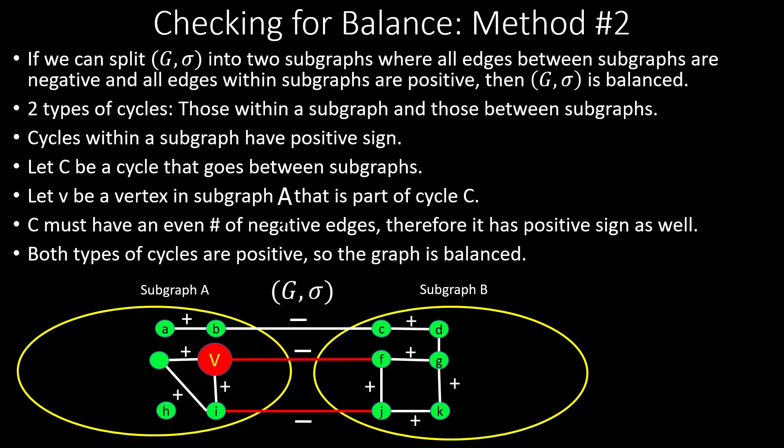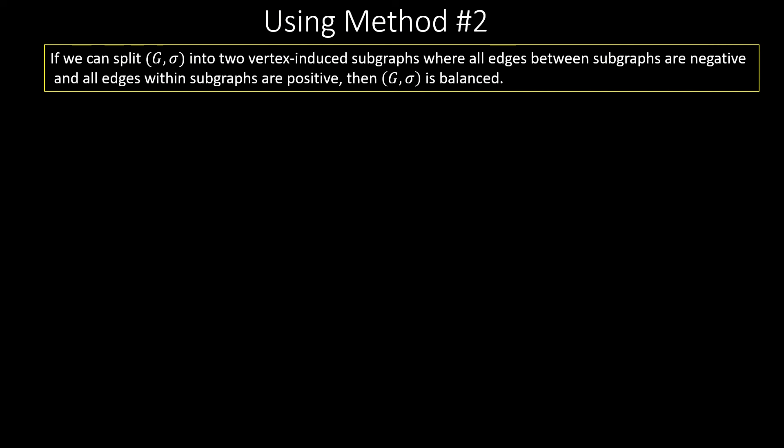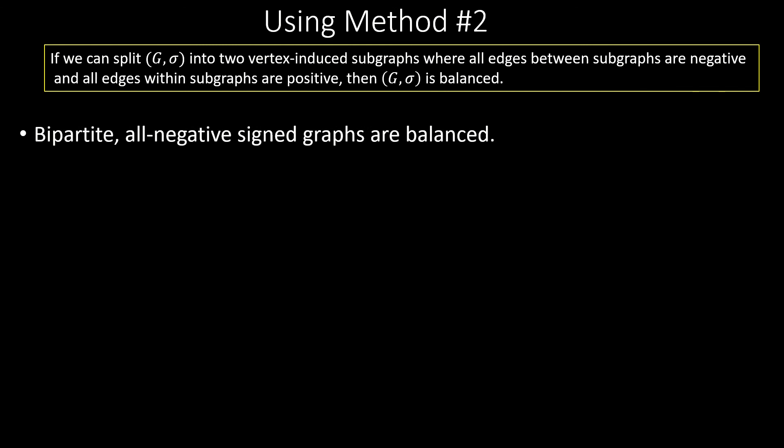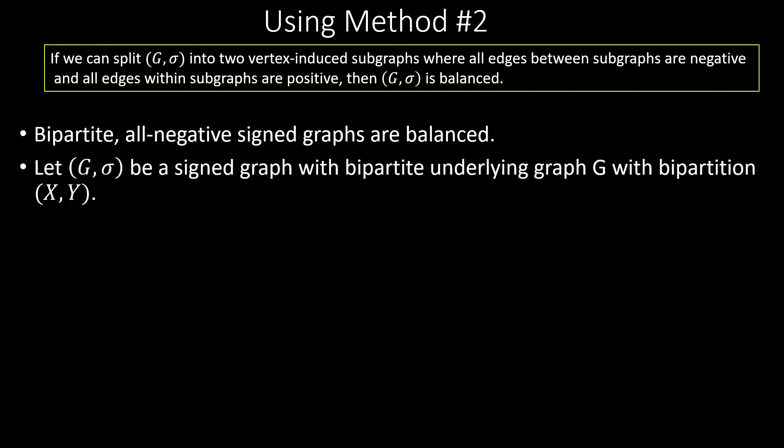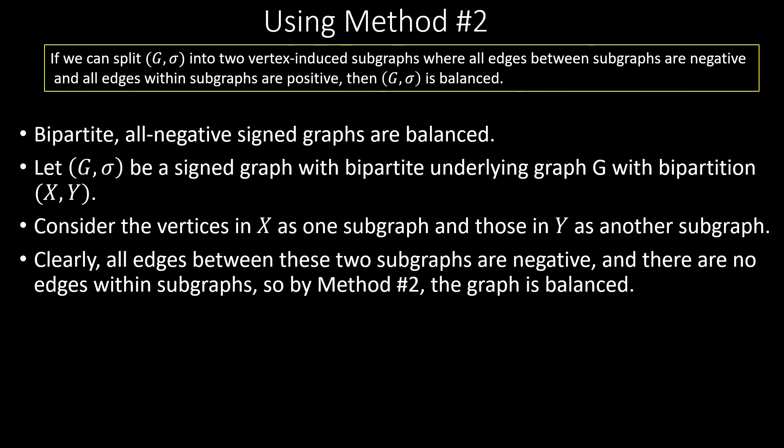Using the second method, we can say that bipartite all-negative signed graphs are balanced. If we have a bipartite signed graph with bipartition X-Y, we take as our two subgraphs those induced by the vertices in X and Y respectively. Since all edges are negative, all edges between subgraphs are negative, and since the graph is bipartite, there are no edges within our subgraphs. So we meet both criteria for method two, meaning our graph is balanced.